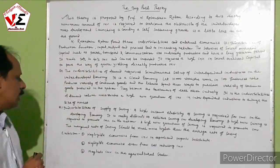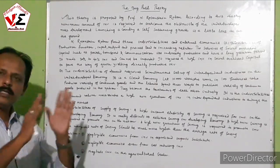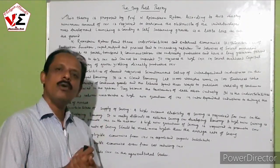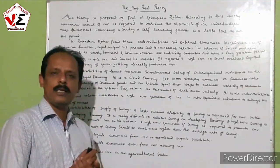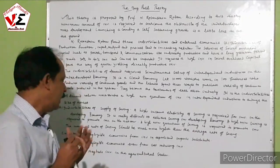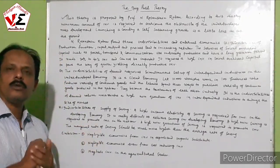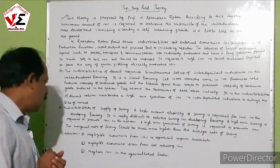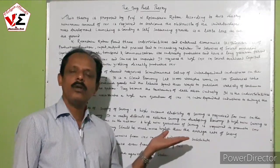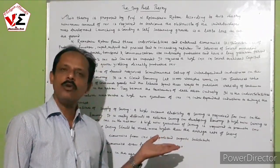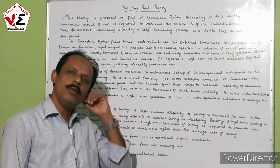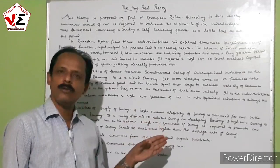The criticisms of the Big Push Theory include: first, it neglects economies from investment in export and import, as the theory is silent regarding export and import substitution because it considers a closed economy system; second, it neglects economics from cost-reducing investment; third, it neglects investment in the agricultural sector, despite high international demand for agricultural food and the importance of agro-based industries that depend on the agricultural sector for raw materials.